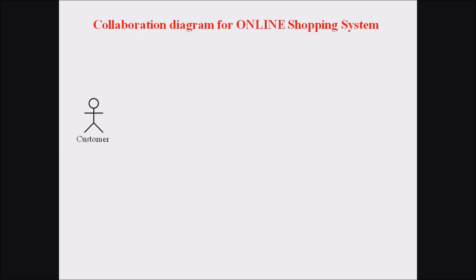Now we are discussing the first example — the collaboration diagram for an online shopping system. An online shopping system contains an actor named customer. Every online system must contain a customer or user. Here we are dealing with a customer and representing this customer as an actor symbol. The second element is the object — an online portal, which is our object.